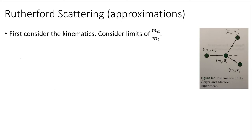Before we consider the Rutherford cross section in its full generality, let's consider just the simple kinematics in the limits where the alpha is much heavier than the target, or in the limit when the projectile alpha is much lighter than the target. We'll do that by considering conservation of momentum and energy using the diagram shown here. The initial alpha is the projectile with its initial velocity hitting a target at rest, going into the alpha with its final velocity and the target velocity itself.